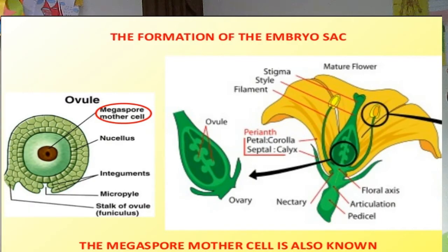One of these eight nuclei becomes the female gamete. Fertilization occurs when a male gamete from a pollen grain fuses with a female gamete inside an ovule. These form a diploid zygote, which grows into an embryo plant.